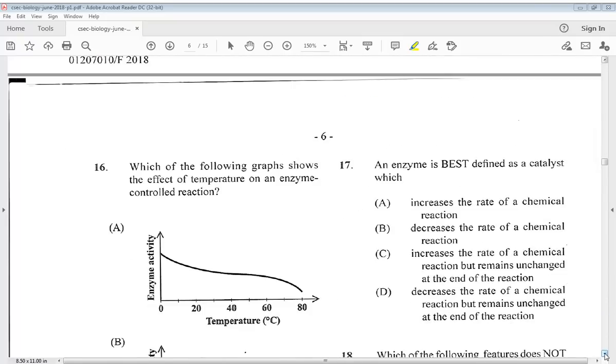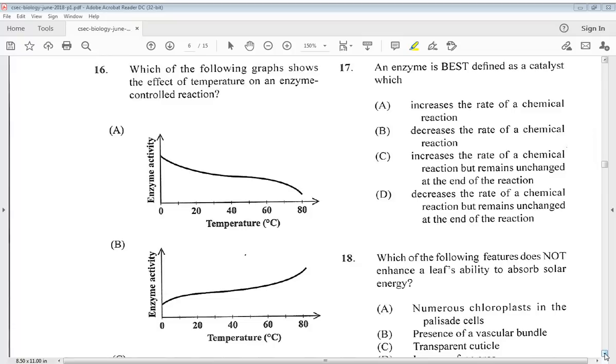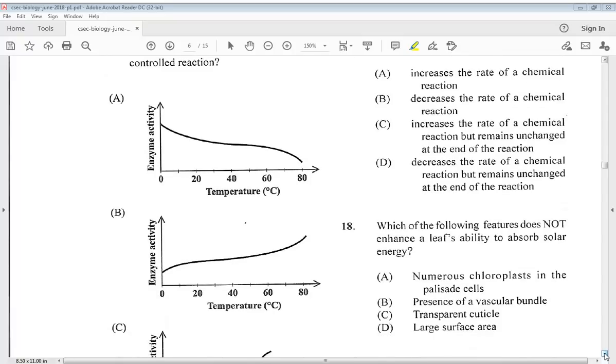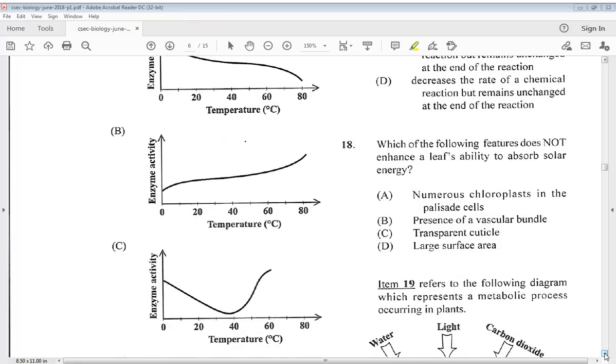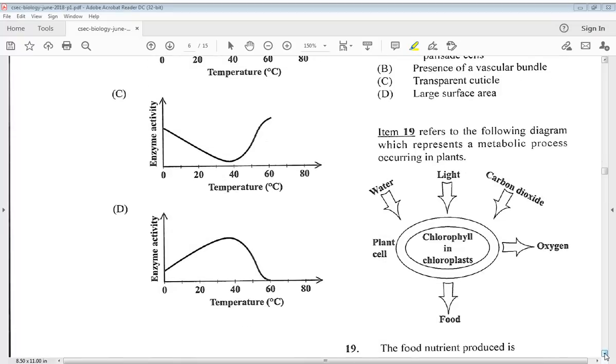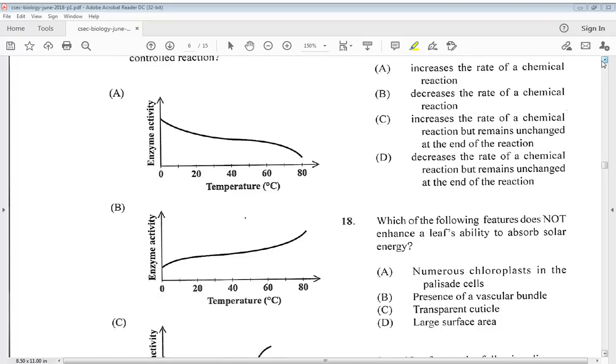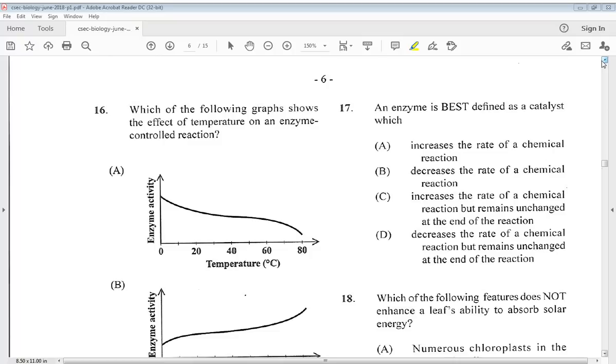Let's go to number 16. Which of the following graphs shows the effect of temperature on an enzyme controlled reaction? We're going to take a look at them. The answer is going to be D. Let's go into number 17. It says an enzyme is best defined as a catalyst which increases the rate of a chemical reaction but remains unchanged. So, the answer for 17 is C.